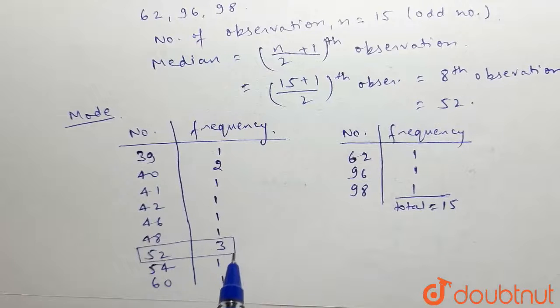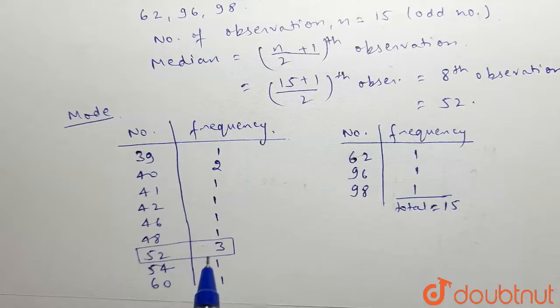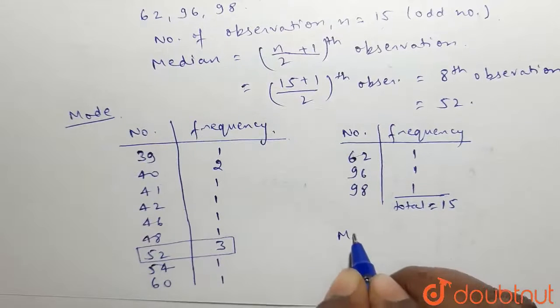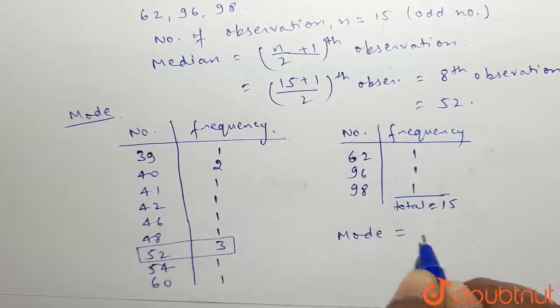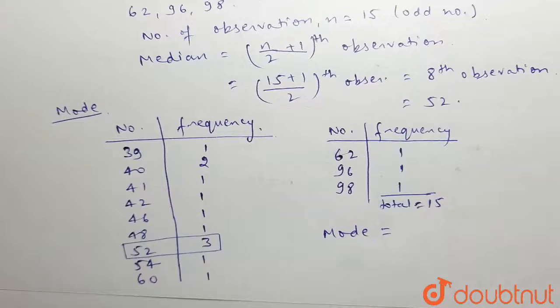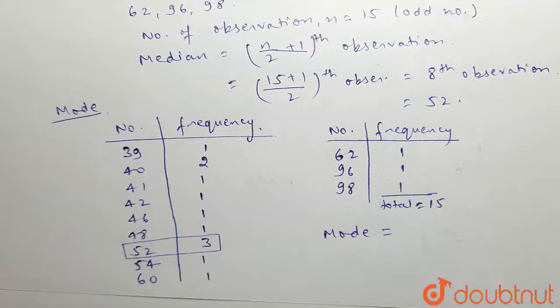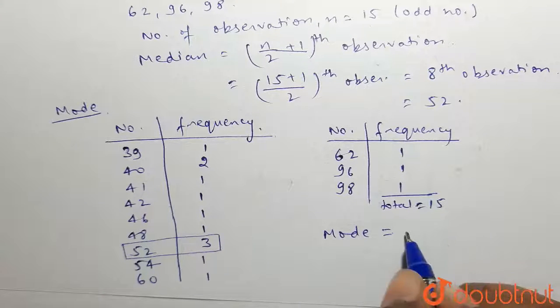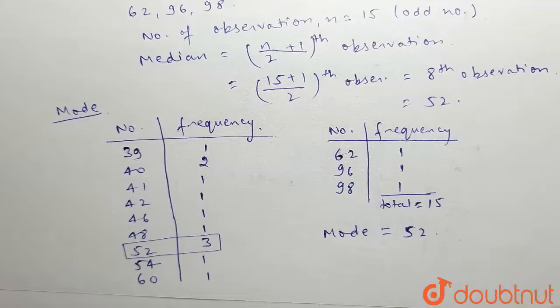Now we can see that 52 occurs maximum number of times with the highest frequency. Mode is the number in the data which occurs maximum number of times, so the mode is 52.